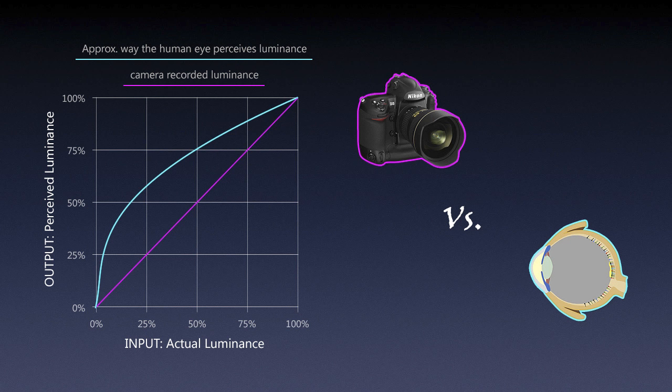That's basically the difference in how we adjust to dark and light tones — we don't adjust immediately, but we do have a much bigger dynamic range than a camera.